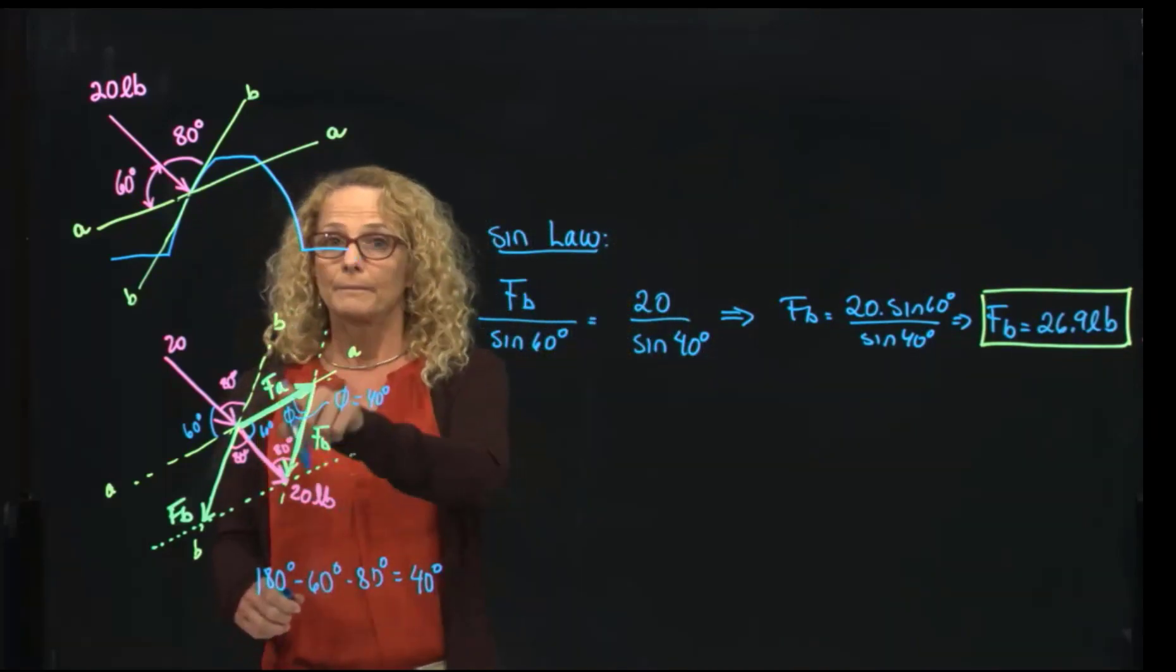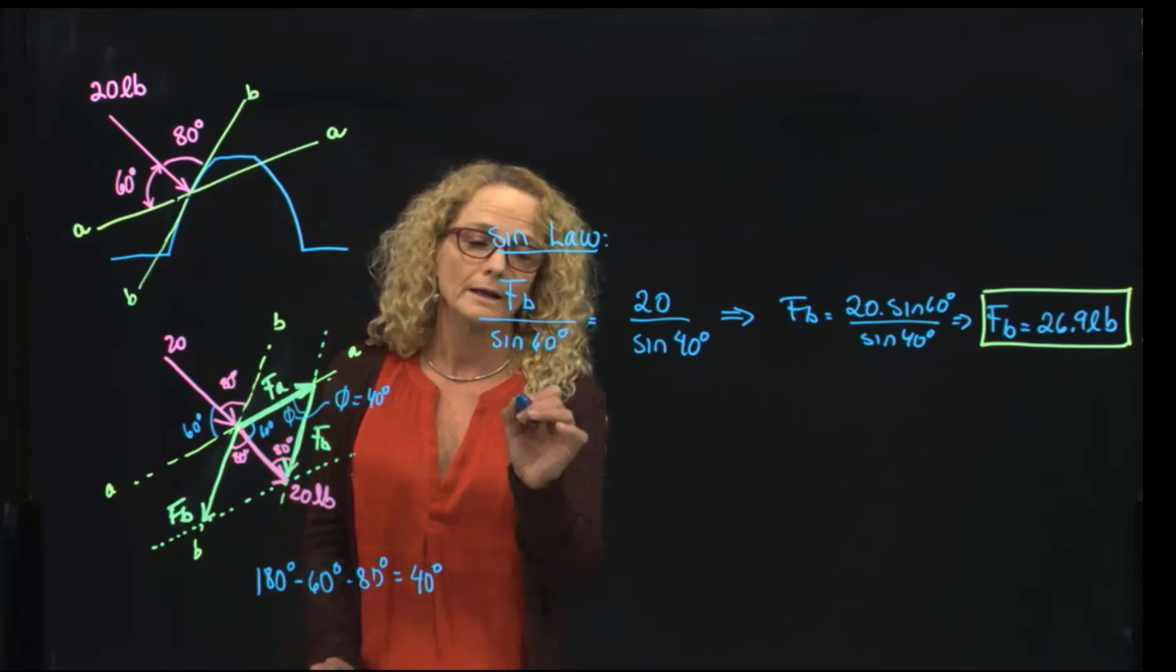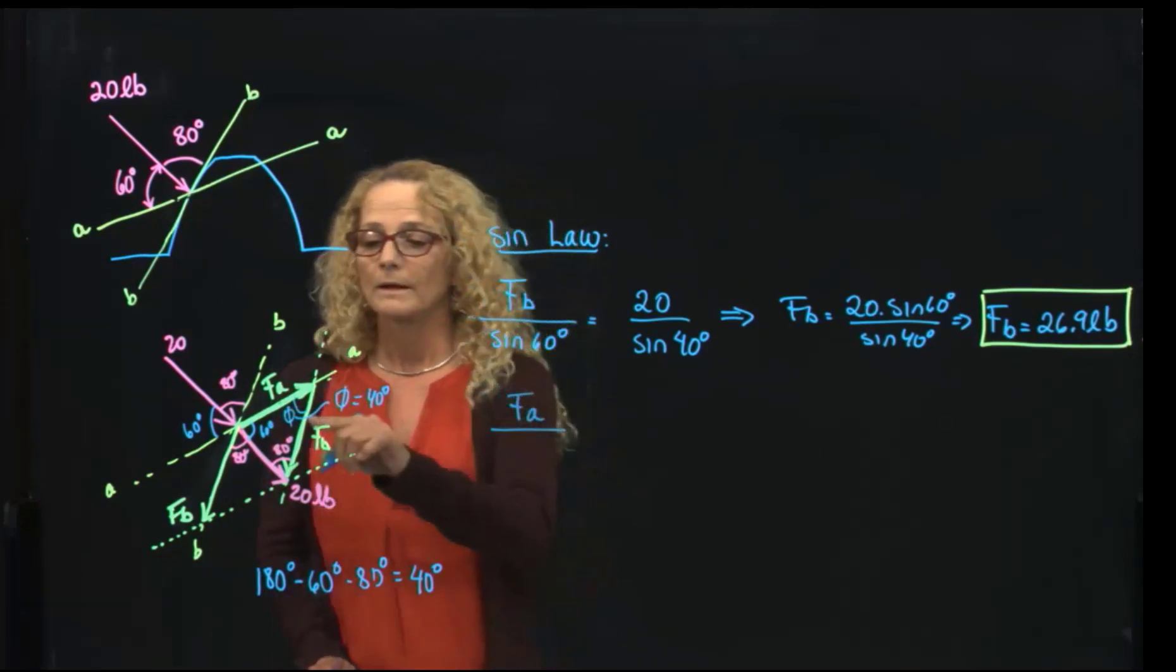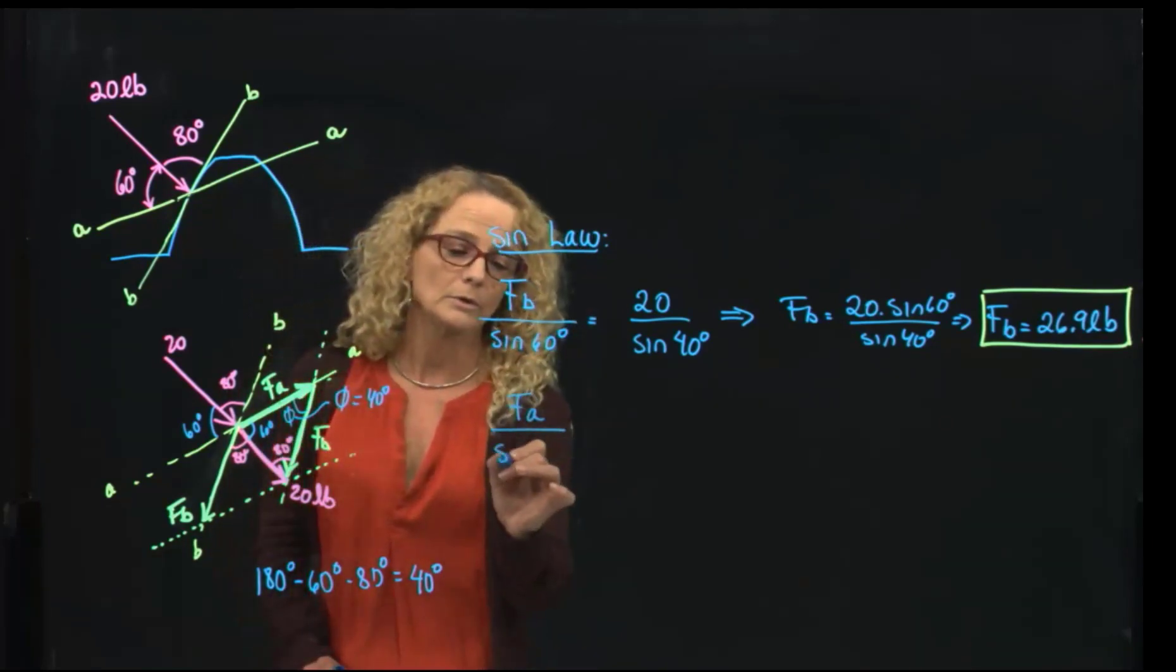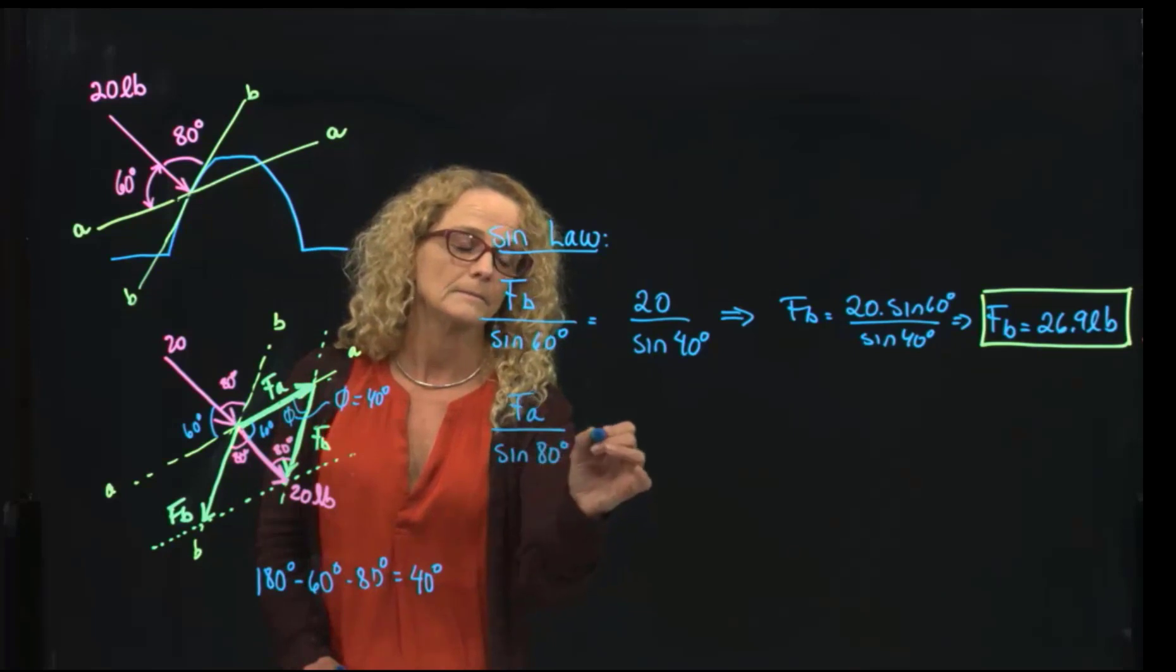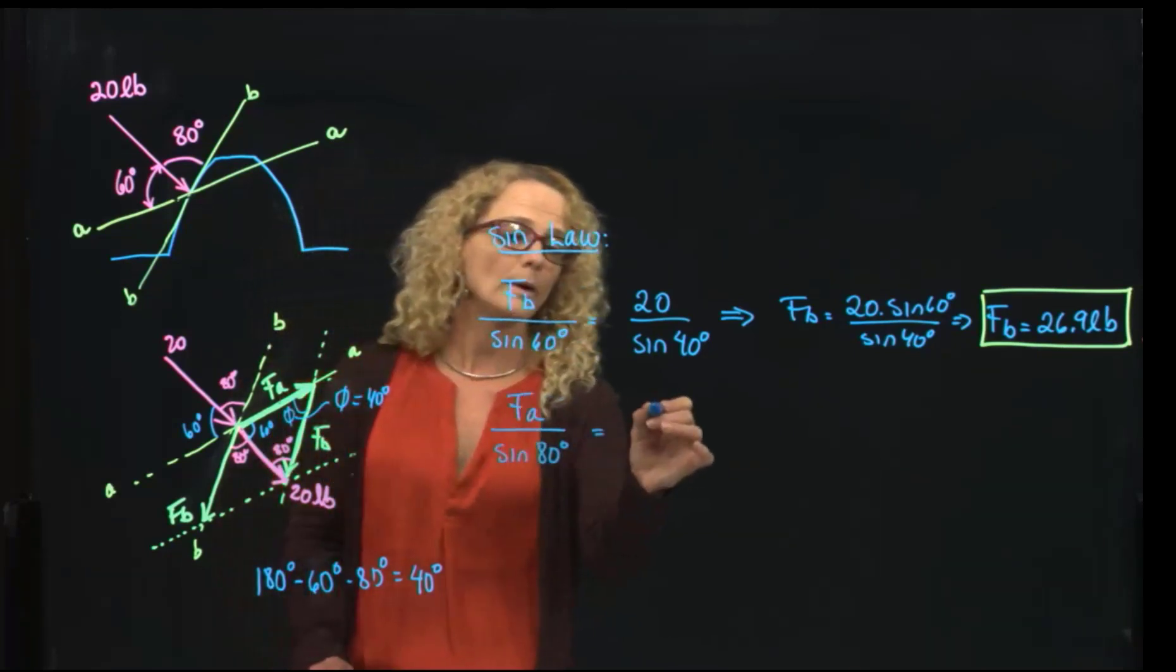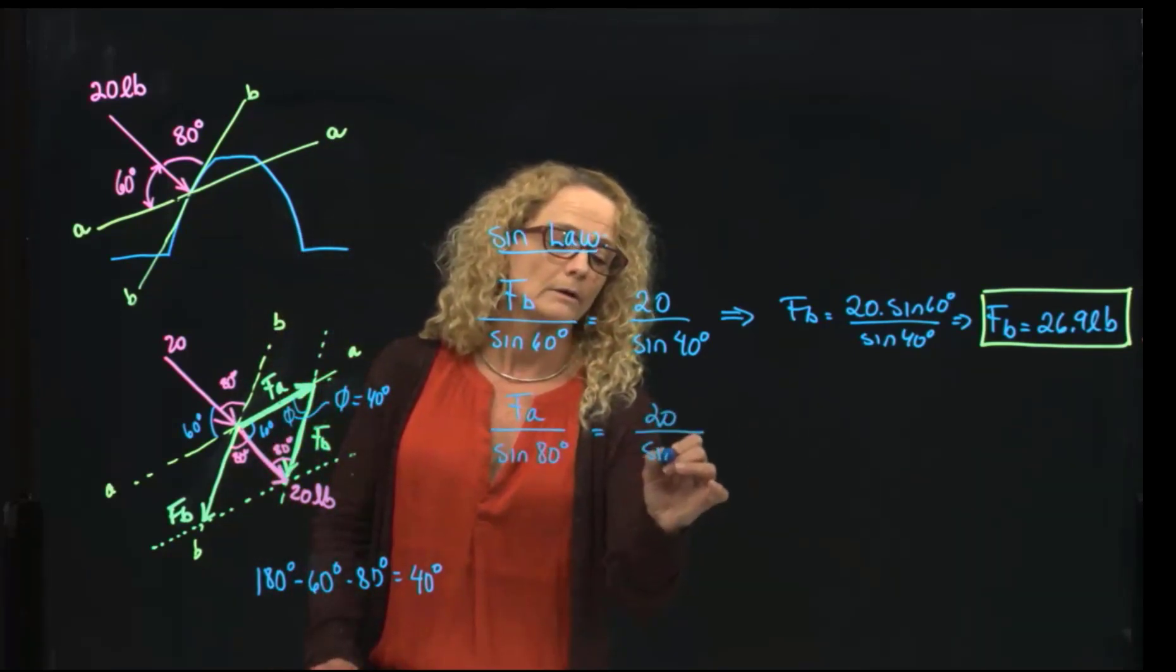Then, I use exactly the same approach in my triangle to find FA. I use the opposite angle, which is 80 degrees. And I have 20 times sine of 80.